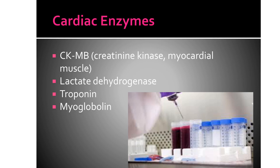The normal value of LDH is approximately 140 to 280 international units per liter. Another is troponin. The troponin test measures the level of cardiac-specific troponin in the blood to help detect heart injury. Troponin is composed of three proteins: troponin C, cardiac troponin I, and cardiac troponin T. Troponin I especially has a high affinity for myocardial injury — it rises within three hours and persists for up to seven days. Normal values are troponin I below 0.6 nanogram per ml, and troponin T ranging from 0 to 0.2 nanogram per milliliter.